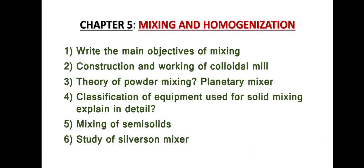Chapter five: Mixing and Homogenization. There are six important questions. Question one: Write the main objectives of mixing. Question two: Construction and working of colloidal mill. Question three: Theory of powder mixing and explain briefly about planetary mixer. Question four: Classification of equipment used for solid mixing — you have to explain the equipment in detail.